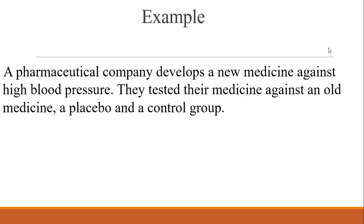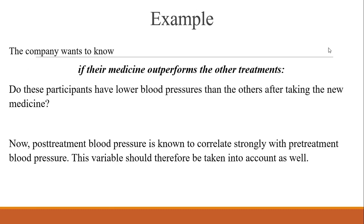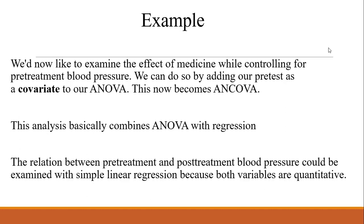Here is an example to be applied in our software SPSS. A pharmaceutical company develops a new medicine against high blood pressure and tests it against an old medicine, a placebo, and a control group. The company wants to know if their medicine outperforms the other treatments — specifically, whether participants have lower blood pressure after taking the new medicine. Post-treatment blood pressure is known to correlate strongly with pre-treatment blood pressure, so pre-treatment blood pressure should be taken into account as a covariate. This analysis combines ANOVA with regression, and the relationship between pre-treatment and post-treatment blood pressures can be examined using simple linear regression since both variables are quantitative.